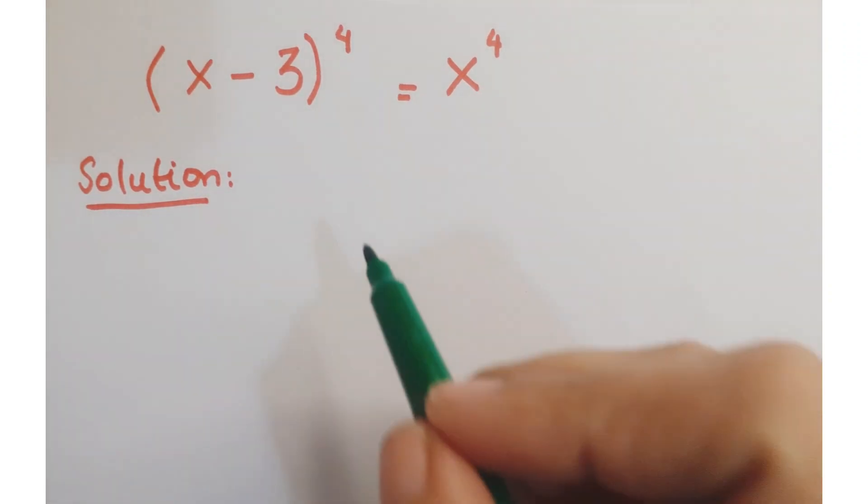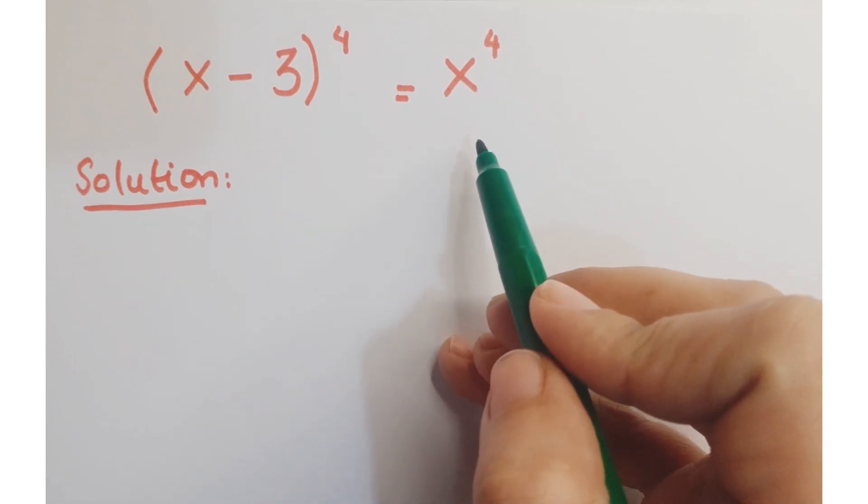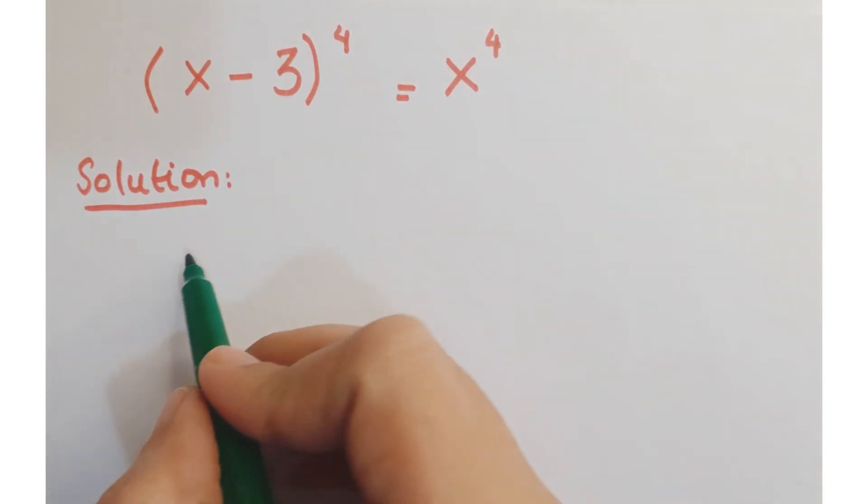Hi guys, look at this question. The question is x minus 3 whole to the power 4 is equal to x to the power 4, and we have to find the value of x.